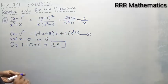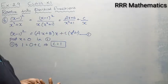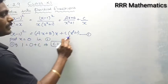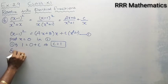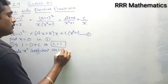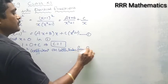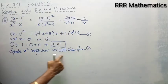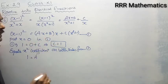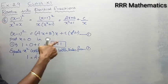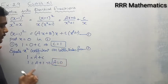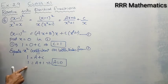Now I want to find a and b. I will equate the x square coefficient on both sides from equation 1. On the left, x square coefficient is 1. On the right, from x times ax plus b we get ax square, coefficient a; from c times x square plus 1 we get cx square, coefficient c which is 1. So 1 equals a plus 1, giving a equal to 0.